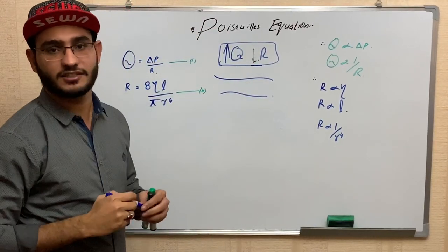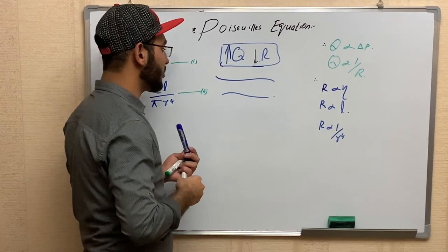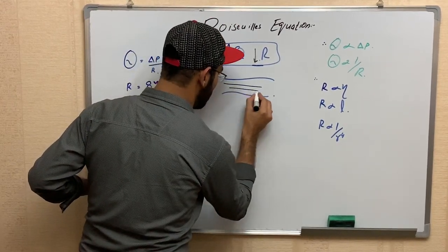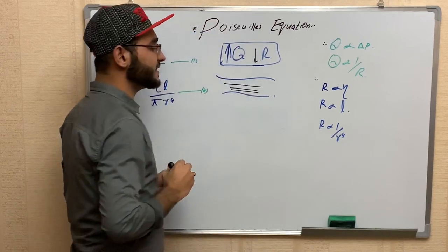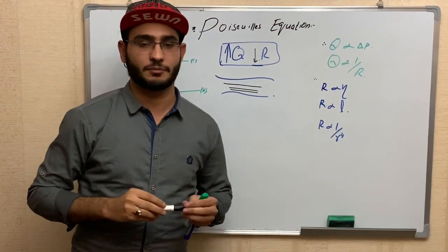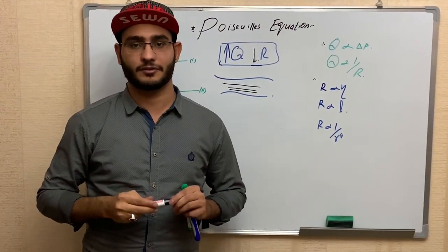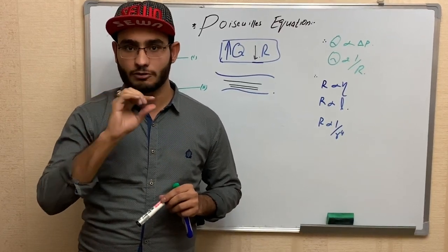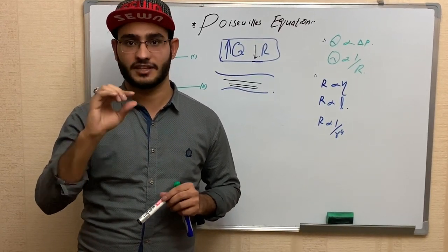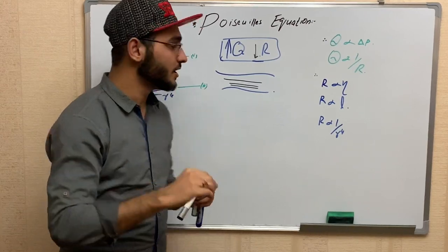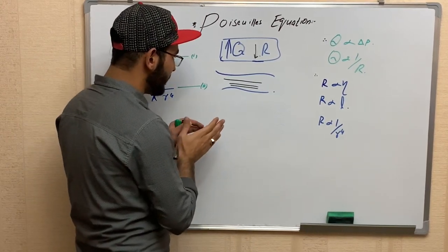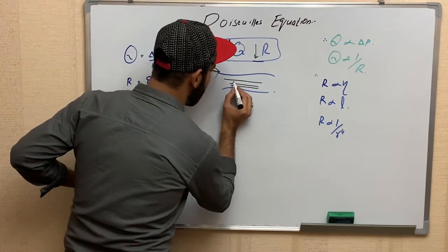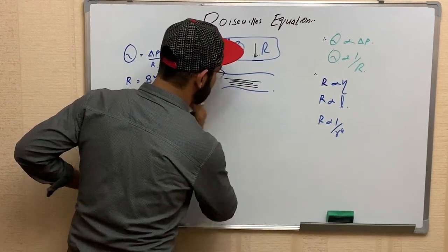The normal flow of blood is laminar flow. The meaning of laminar flow is that within the blood vessel, blood flows in a regular, smooth, and parallel shape. Under these conditions, the flow rate of blood is maintained at a higher level.